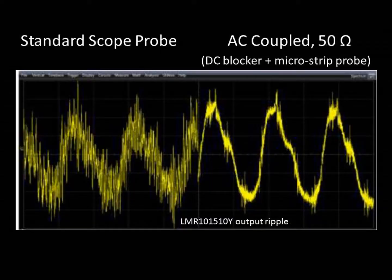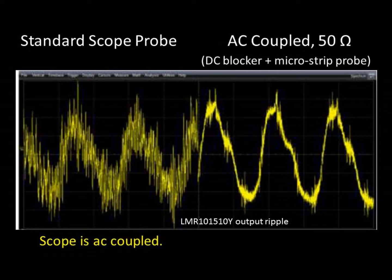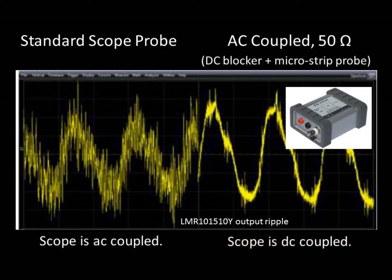The results of those two measurements are shown here. The waveform on the left was captured with the scope probe, while the waveform on the right was obtained using the AC coupled 50 ohm measurement. Remember that the measurement on the left is taken with the scope input AC coupled, while the measurement on the right is taken with the scope input DC coupled, which is the setting that offers the greatest sensitivity. It's the addition of the J2130A DC blocker that allows the second measurement to be AC coupled.